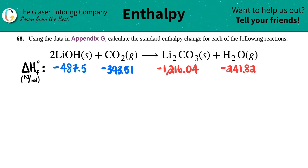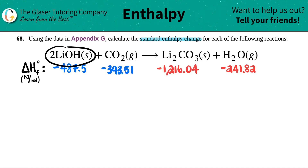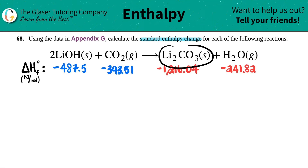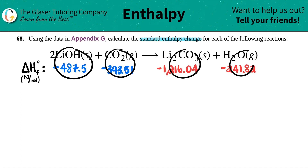Number 68. Using the data in Appendix G, calculate the standard enthalpy change for each of the following reactions. The reaction is: two lithium hydroxides — 2 LiOH solid plus CO₂ gas will yield Li₂CO₃ solid plus H₂O gas. I already went into Appendix G and wrote down the numbers for each corresponding compound.